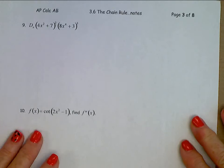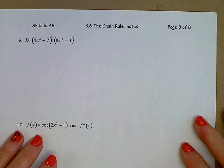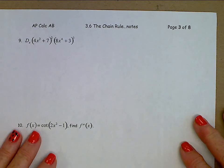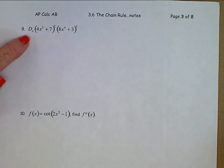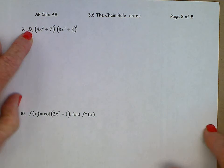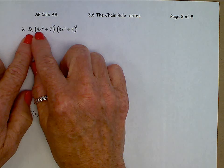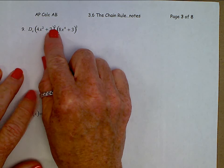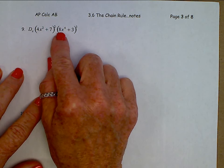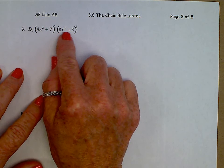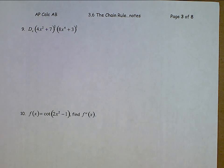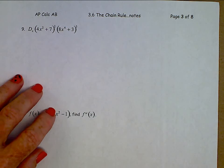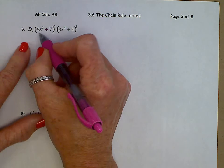Section 3.6, more chain rule problems, page 3. Let's bring back some old notation. Capital D sub X of (4X squared plus 7) squared times (8X to the 4th plus 3) cubed. This is another product rule — find the derivative of this mess.